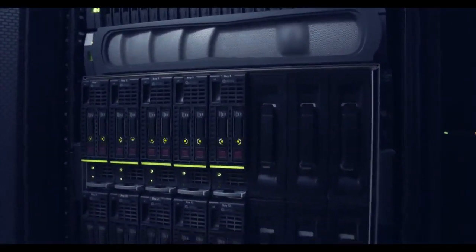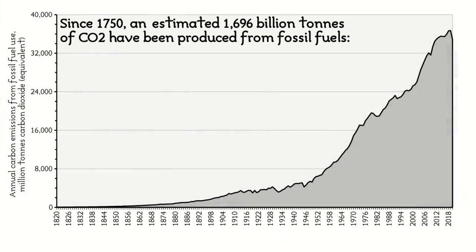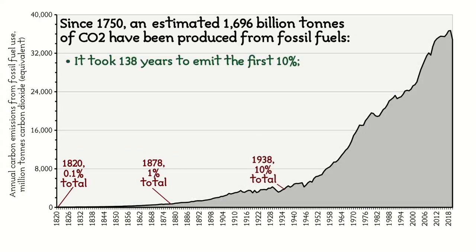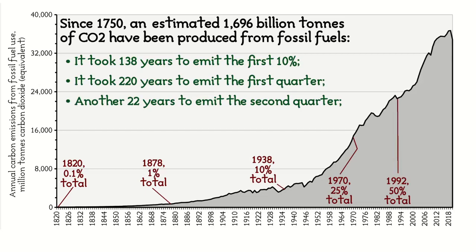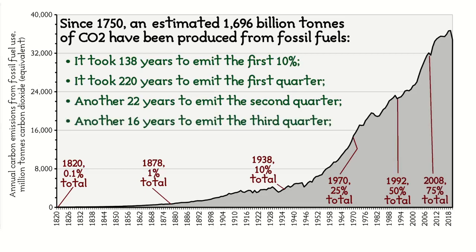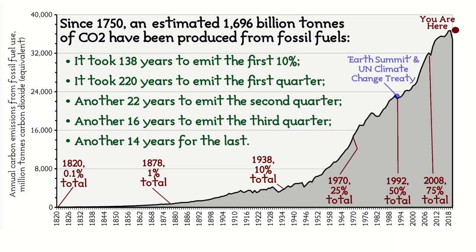This brings us to the deeper message within the data about those dangerous exponentials. In the 270 years from 1750 to 2020, roughly 1,696 billion tons of carbon dioxide have been emitted from the use of fossil fuels. It took 220 years to emit the first quarter. It took 22 years to emit the second quarter. It took 16 years to emit the third quarter. And it took 14 years to emit the last quarter. In fact, since 1750, half of all the carbon dioxide emitted from fossil fuel use has taken place since 1992, when the world agreed a treaty that pledged action to curb emissions.